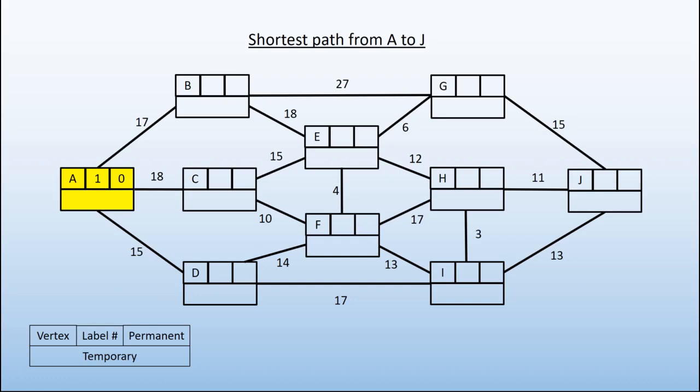Our next stage is to add the distance from A to each of the vertices it is connected to directly. So we can get from A to B in a distance of 17, to C in a distance of 18, and D in a distance of 15. They're the only ones we need to consider, as A is not directly connected to any other vertices.